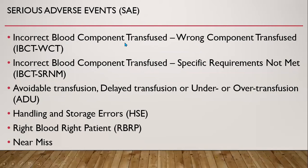This is the list of serious adverse events as part of the UK SHOT program. One is incorrect blood component transfused, which has two divisions: wrong component transfused and specific requirement not met. Then, avoidable transfusion, delayed transfusion, or under or over transfusion. Then, handling and storage errors. Then, right blood right patient event, and near-miss event.